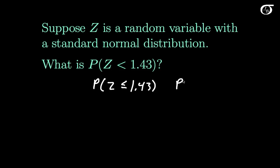Because the probability that Z is equal to 1.43 is 0. Z is a continuous random variable, and for continuous random variables the probability they are exactly equal to any value is 0. So whether I say less than or less than or equal to, we'd get the same answer.